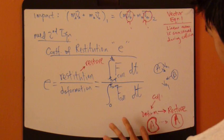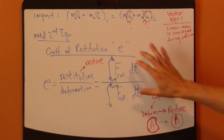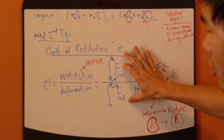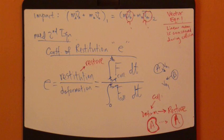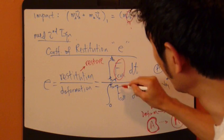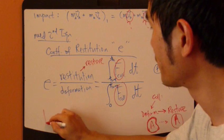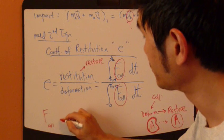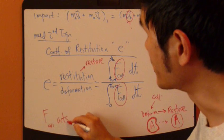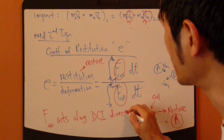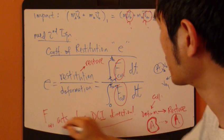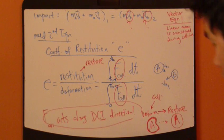So, this is the definition of coefficient restitution. Now, it's a ratio of these two things. And they both are the same units, which means that E is unitless. It's dimensionless. And also, another thing to note is that the collision forces always act along the direct central impact direction.